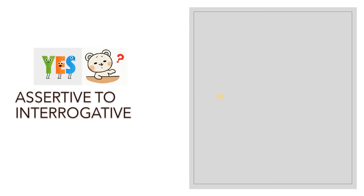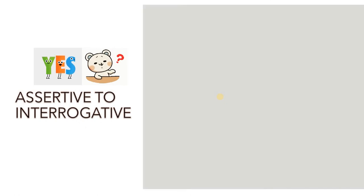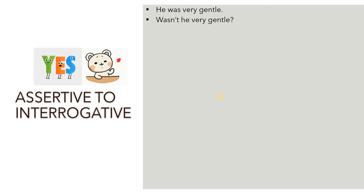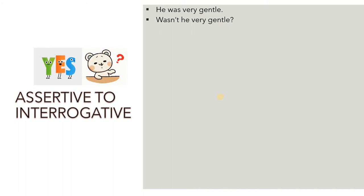Now we come to assertive to interrogative. 'He was very gentle' is assertive; 'Wasn't he very gentle?' is interrogative. The meaning does not change, but the form has totally changed — earlier it was a statement, and now we have a question.